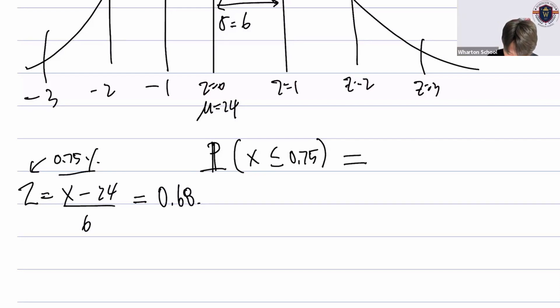So if the, let's go for x, then x is like 0.68 multiplied by 6 plus 4. So this value represents the third quartile.